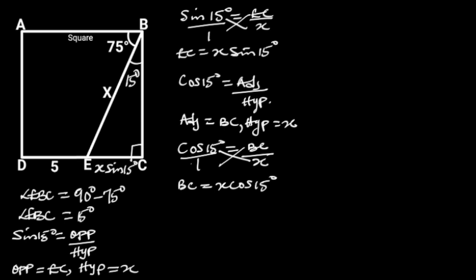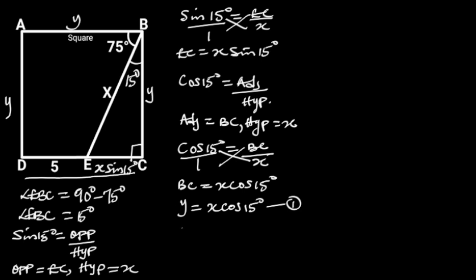Now, let's observe that BC is the side length of the square. If we take Y to be the side length of the square, it follows that Y will be equal to X cos 15 degrees. Let's call this equation 1. Since the side lengths of a square are equal, Y will also be equal to 5 plus X sine 15 degrees. Let's call this equation 2.